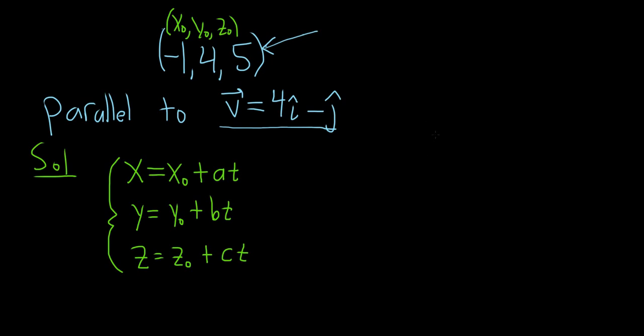And ABC is a vector, so V equals the vector ABC. This is called a direction vector. And these numbers, ABC, are called direction numbers. And this vector is parallel to our line, so it's parallel to the line.